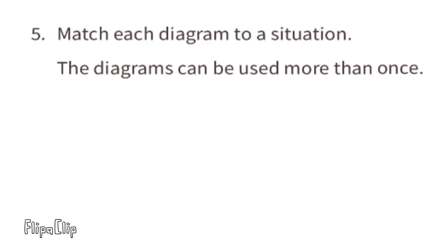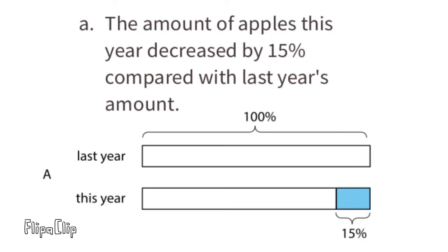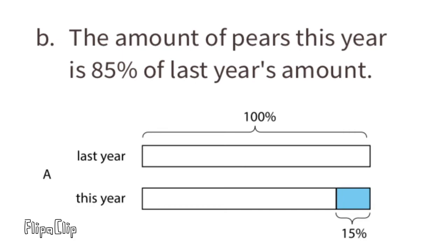Problem number five: match each diagram to a situation. The three diagrams can be used more than once. Situation A and Diagram A match: the amount of apples this year decreased by 15 percent compared with last year's amount. Situation B also matches Diagram A: the amount of pears this year is 85 percent of last year's amount, since 100 percent minus 15 percent equals 85 percent.